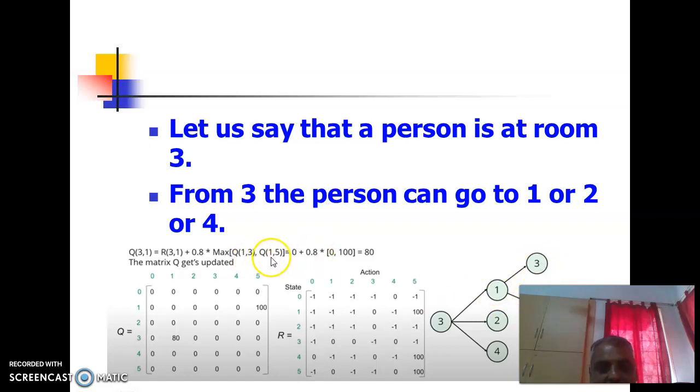So Q(1,3), Q(1,5). Substituting the values we get 80. Now the matrix Q gets updated for 3,1 we will put 80. Here we will not be making any changes.